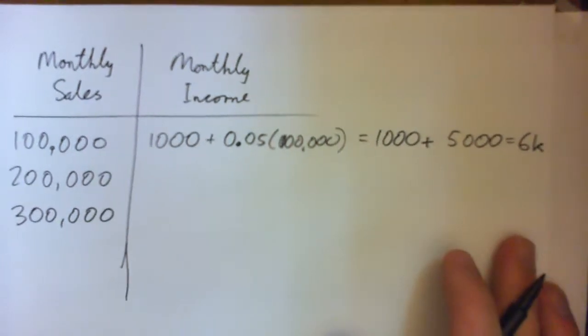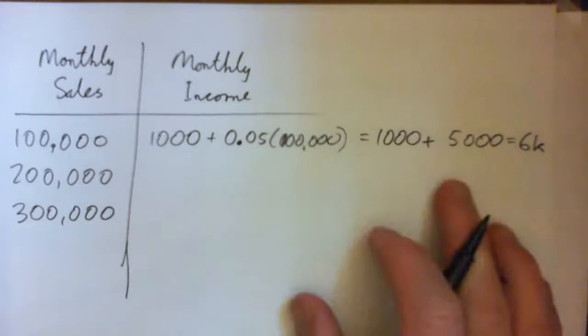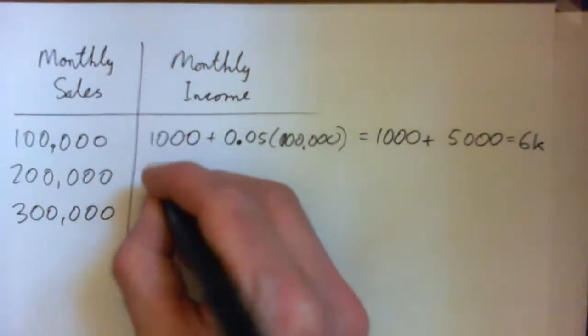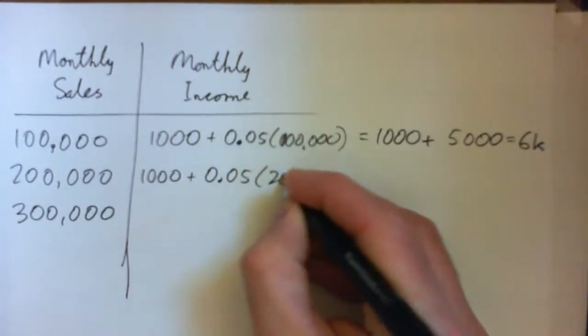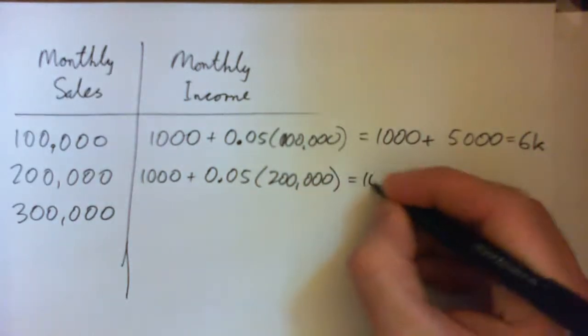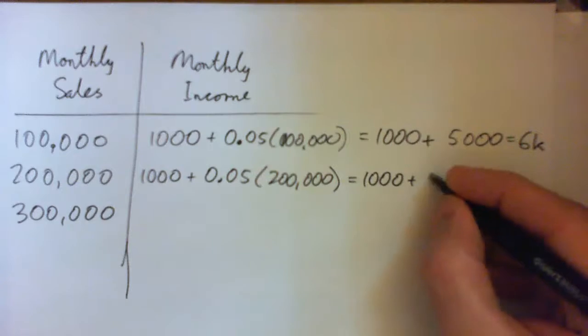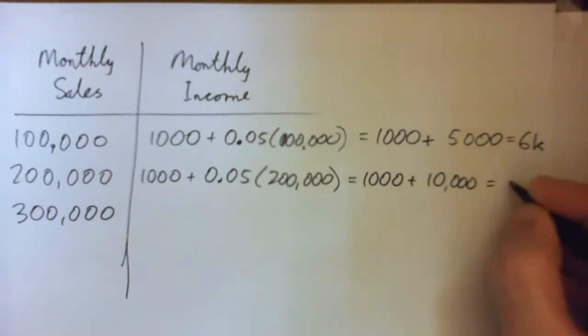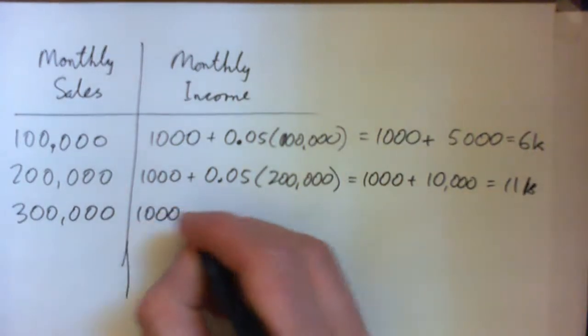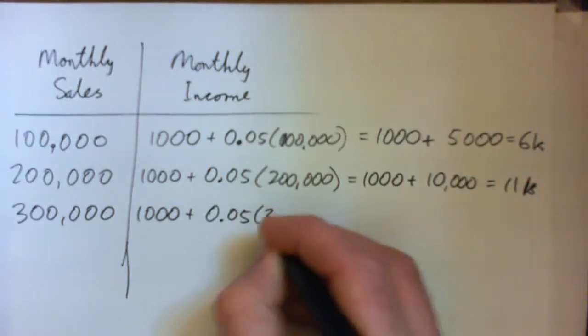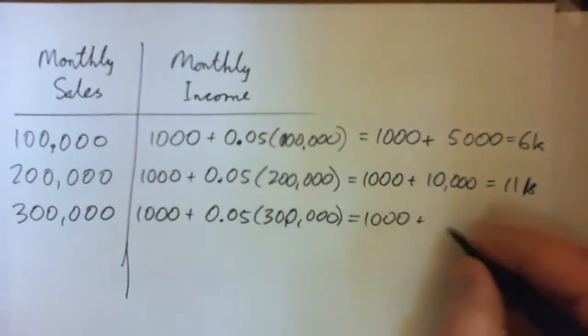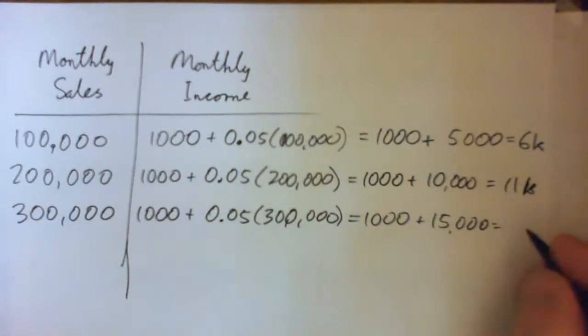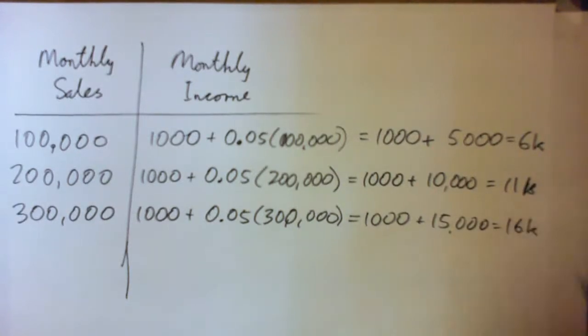K is, in real life people often write K to represent $1,000. If you sold property for $200,000 that month you'll get $1,000 plus $10,000, so that's $11,000 monthly income for that month. And then this would be $1,000 plus $15,000 or $16,000.